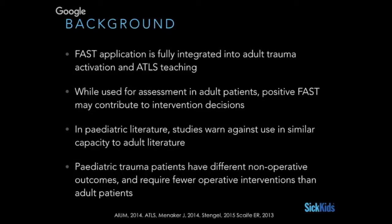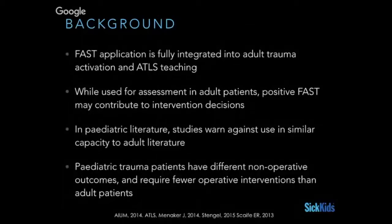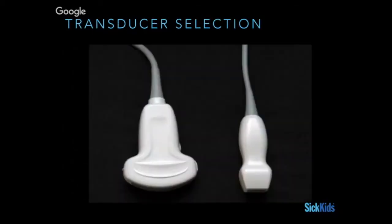The pediatric literature suggests we can't use the FAST in a similar capacity. Pediatric patients differ from adults in trauma: kids have more non-operative outcomes and fewer significant traumas overall. As you know with any test, when prevalence decreases, the ability to use that test in a clear and sensitive role becomes even more difficult. Since prevalence is quite low in pediatrics, the problems with the test become more exacerbated.